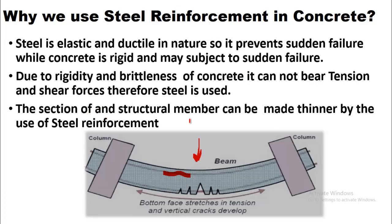The section of a structural member can be made thinner by the use of steel reinforcement. As some of the forces will be taken up by the steel, we can reduce the size of the section of any structural member like a slab, beam, or column.